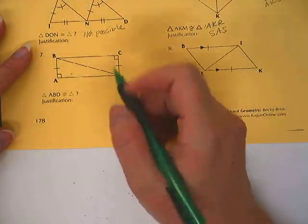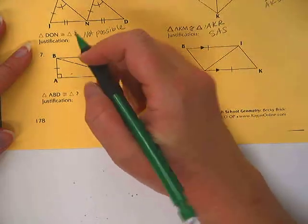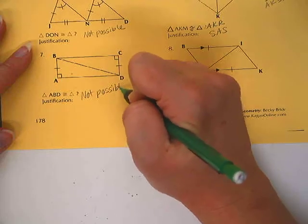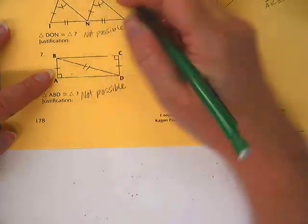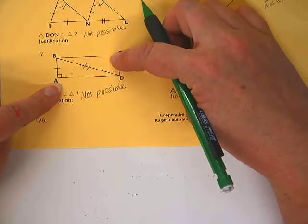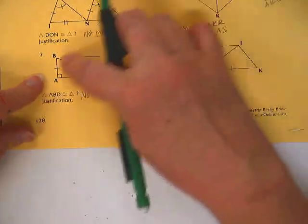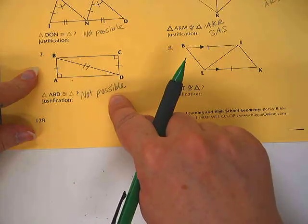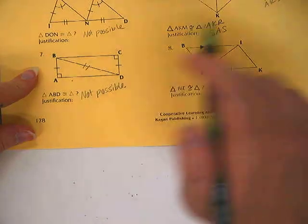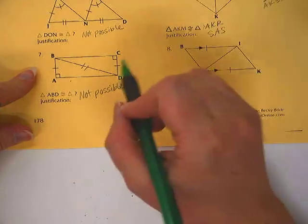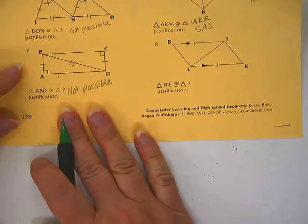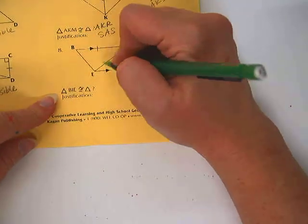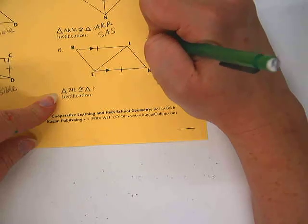The next one, based on what we've learned so far with SSS and SAS, this one would be not possible for today because technically it would be a side-side-angle problem. But we're going to learn in a few days how to actually make this one possible with a different theorem, not SSS, not SAS, and it will no longer defy SSA because it has to do with the fact that it's a right triangle. It will work. But for today, since we don't know it, we say not possible.